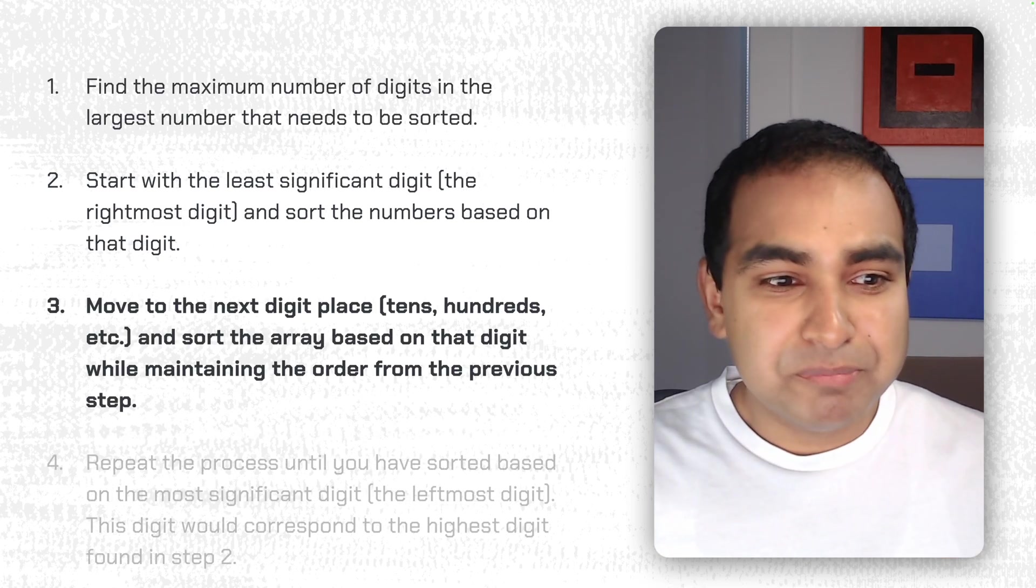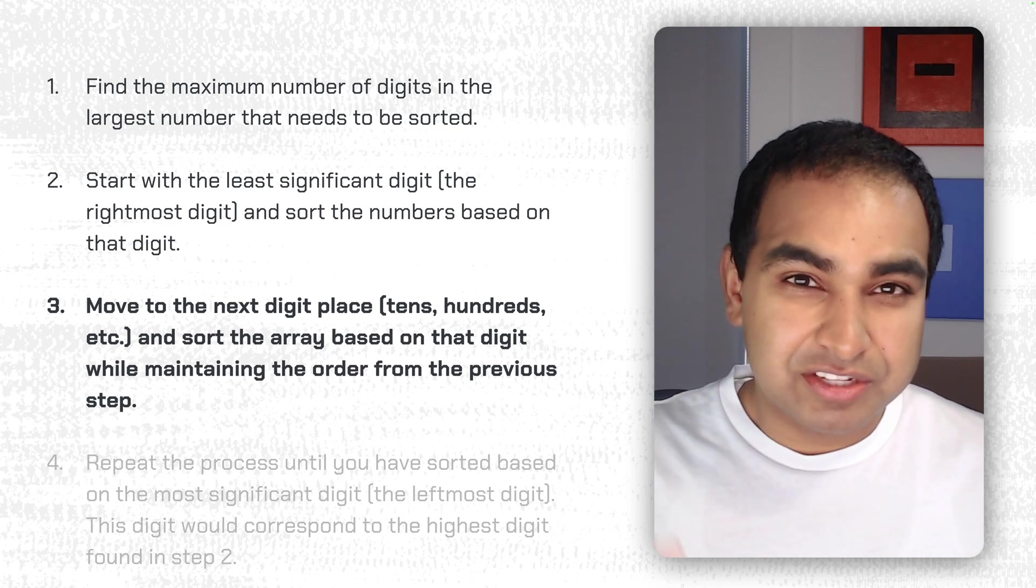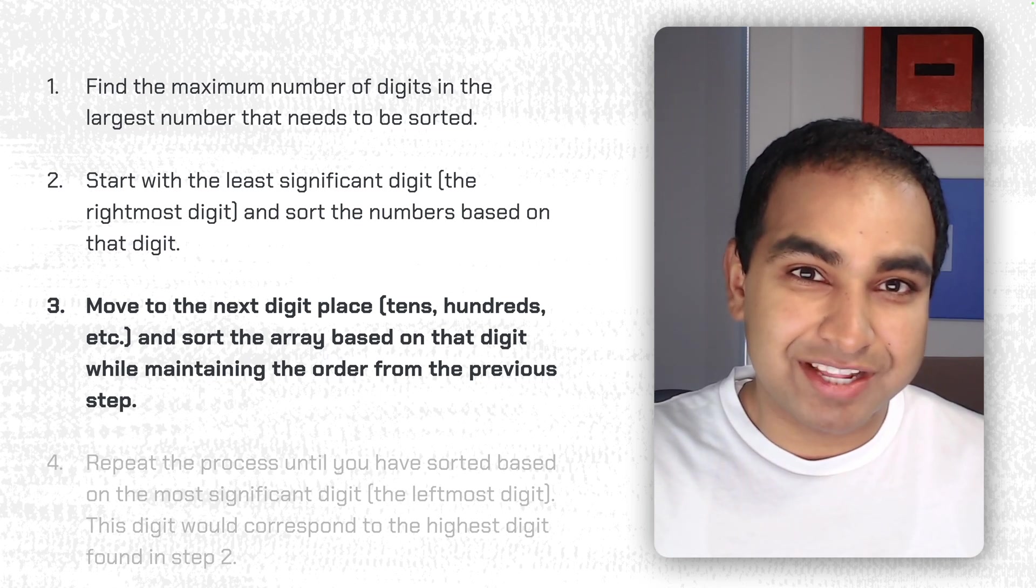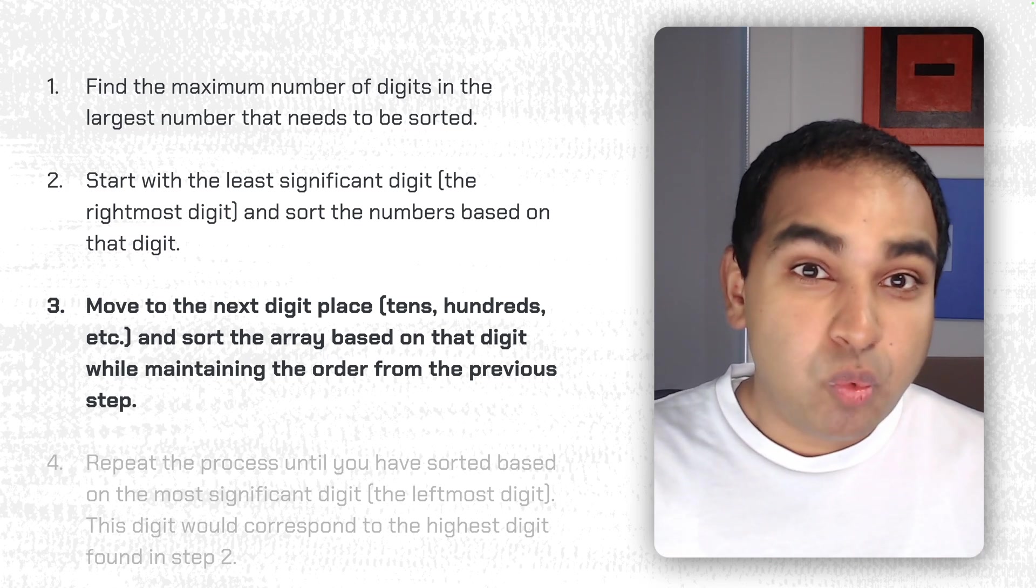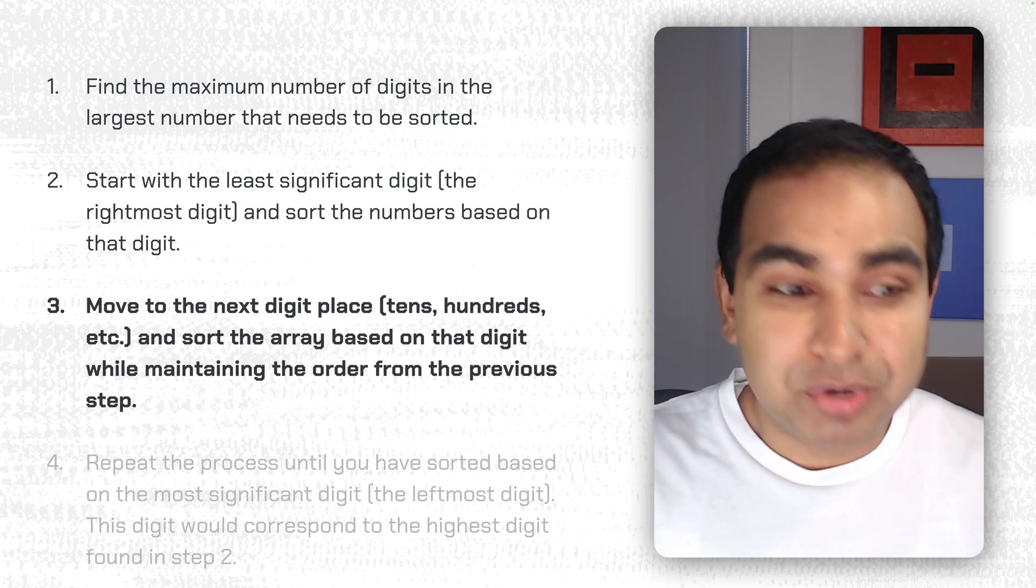Step 3. We move to the next digit place. If we just did the 1s digit, we go to the 10s, we go to the 100s, and sort the array based on that digit while maintaining the order from the previous step.